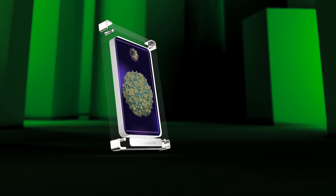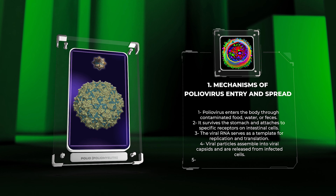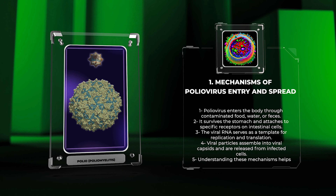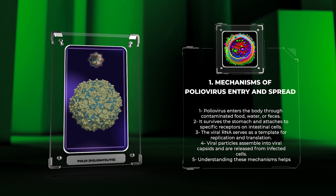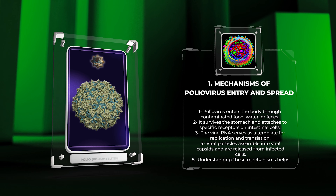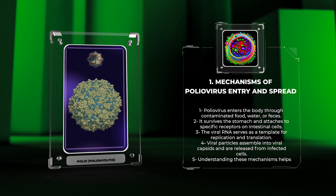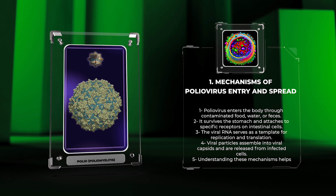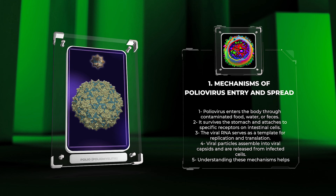Poliovirus, a type of enterovirus, enters the body through contaminated food, water, or feces. It survives the stomach and attaches to specific receptors on intestinal cells. It then enters the cells through a process called receptor-mediated endocytosis, where it is released into the cell's cytoplasm. The viral RNA serves as a template for replication and translation, leading to the formation of new virus particles. These particles assemble into viral capsids and are released from the infected cell, perpetuating the spread of the virus.